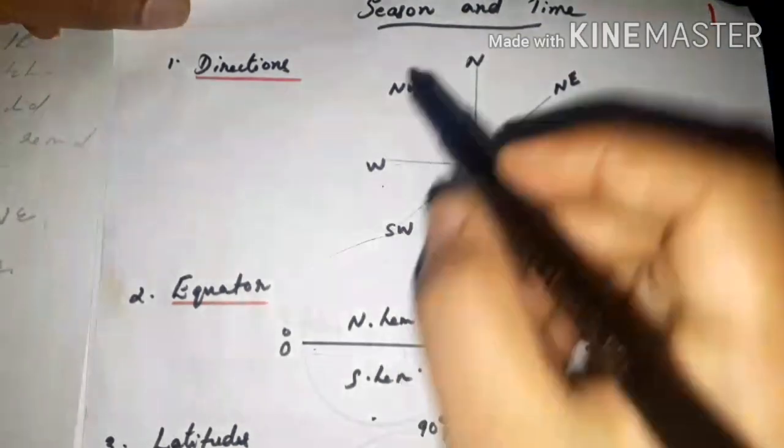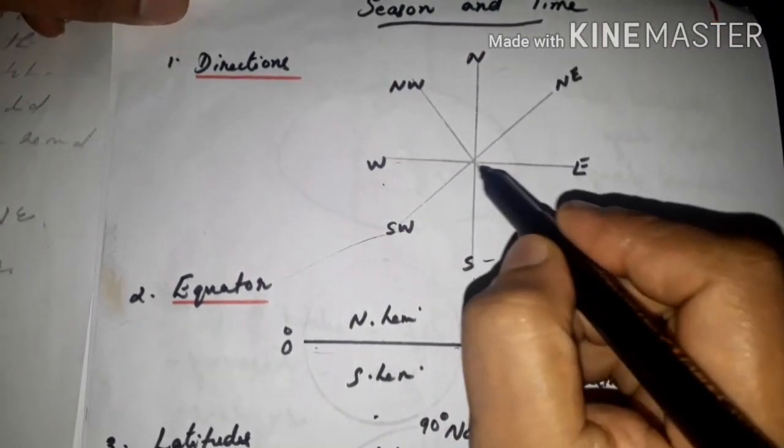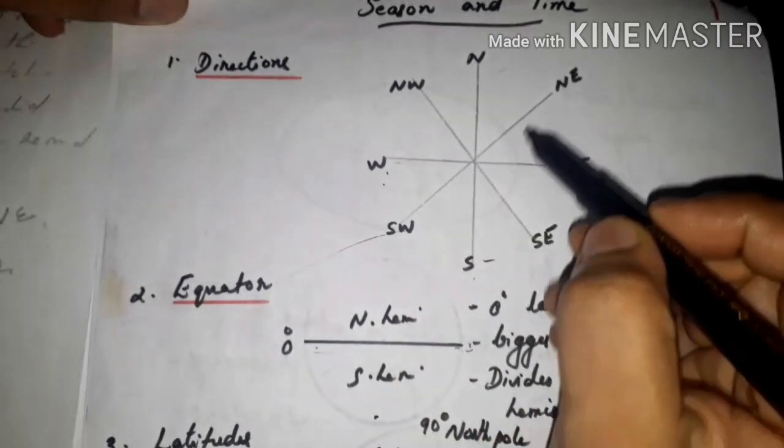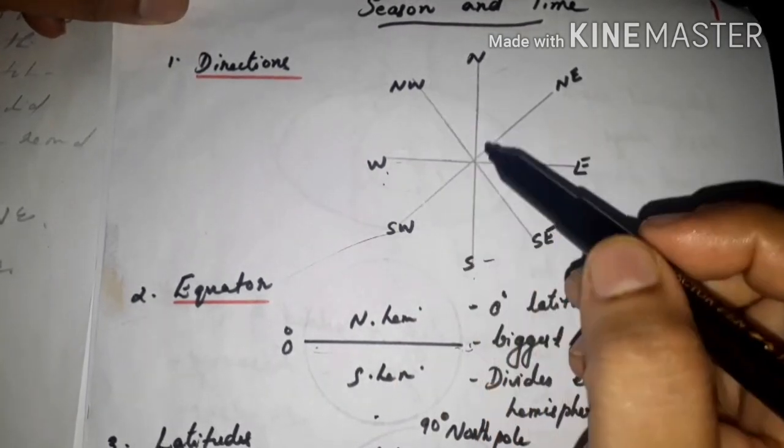Today let us start with a small part of this chapter. When we draw lines like this, this is north, south, east, and west. This is northeast here, southeast, southwest, and northwest.